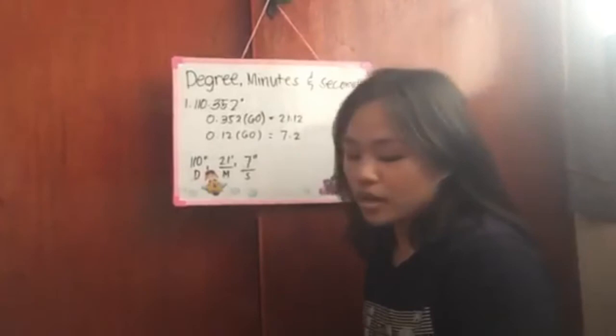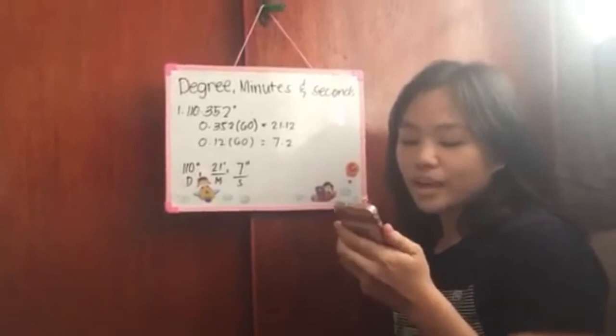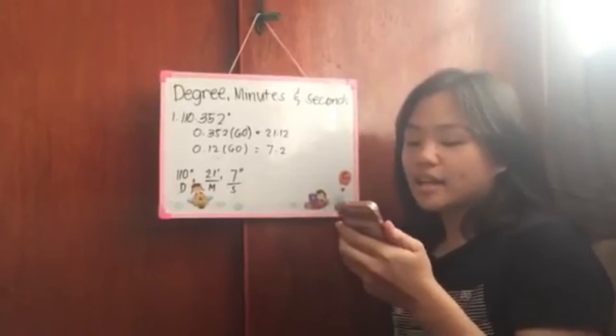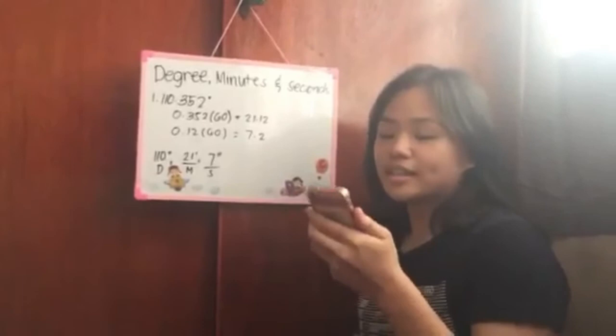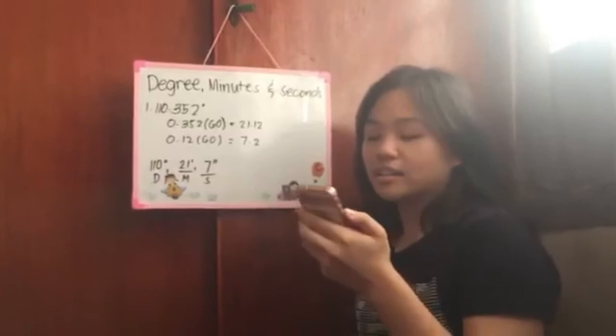Last topic is degree minutes and seconds. Each degree is split up into 60 parts. Each part being 1 over 60 of a degree. These parts are called minutes. Each minute is split up into 60 parts. Each part being 1 over 60 of a minute. These parts are called seconds. The part of an angle could be stated this way: 40 degrees, 20 minutes, 50 seconds.